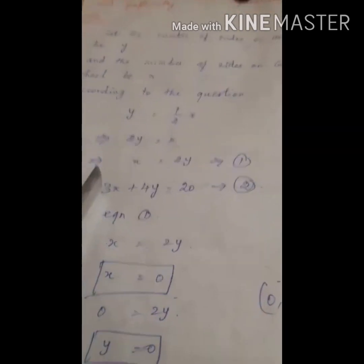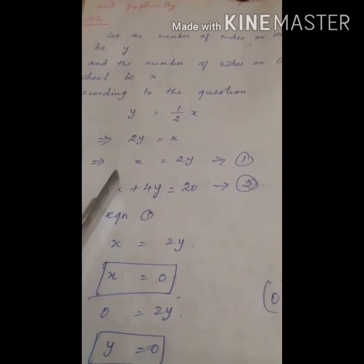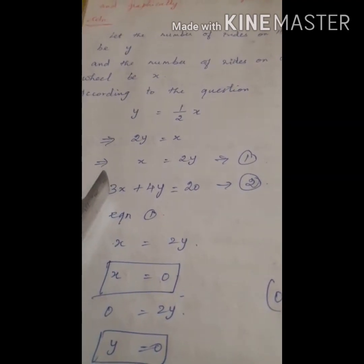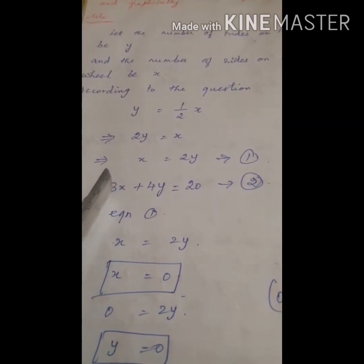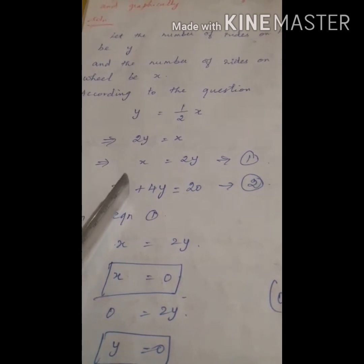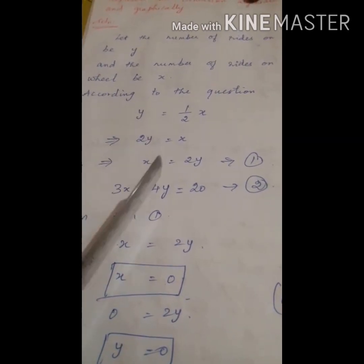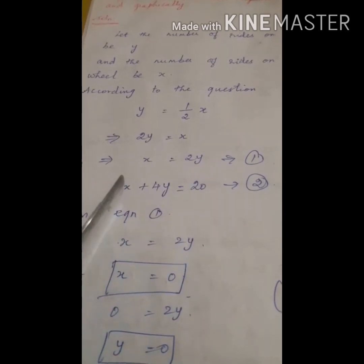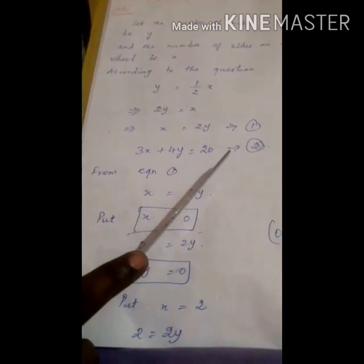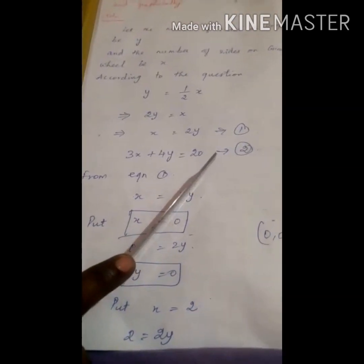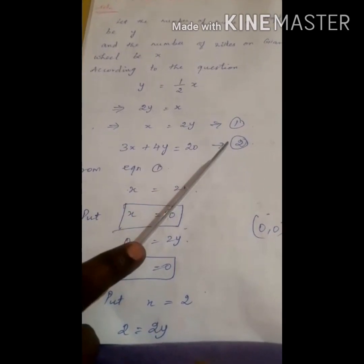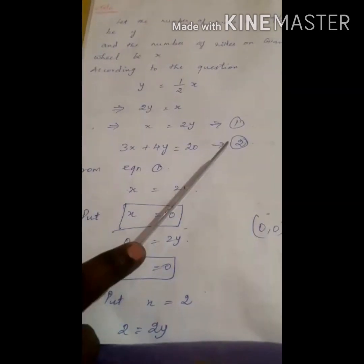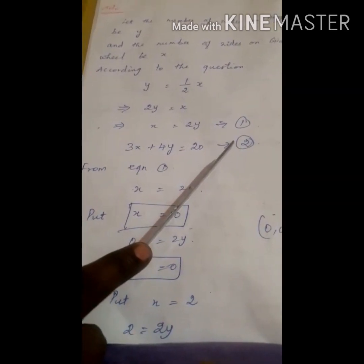According to the second condition, the number of rides on the giant wheel is x and the cost for one ride is rupees 3. Therefore, the total amount for the giant wheel is 3x and for hoopla it is 4y. The total amount spent is 20, that is 3x plus 4y is equal to 20. Now we have to solve these two equations graphically.